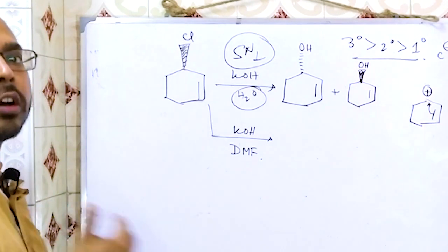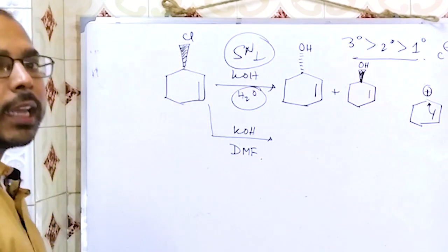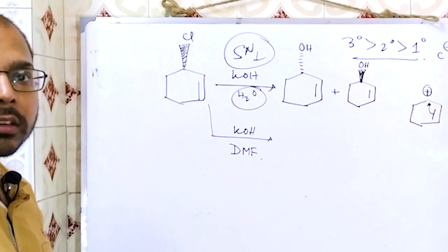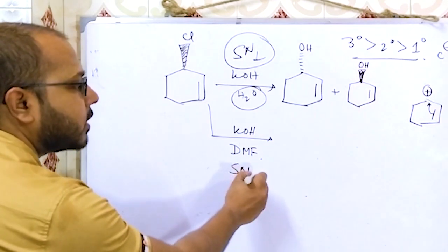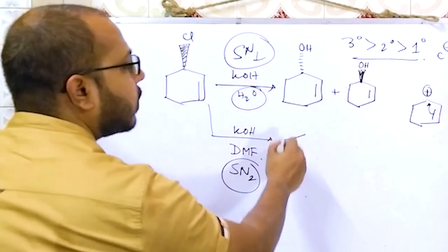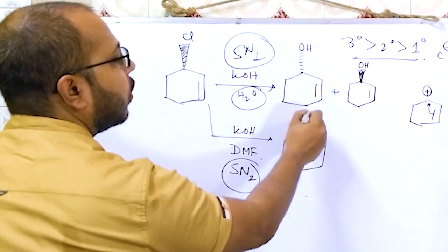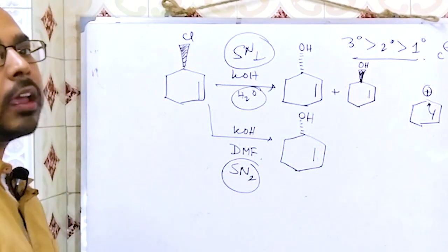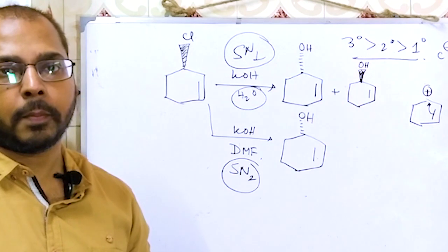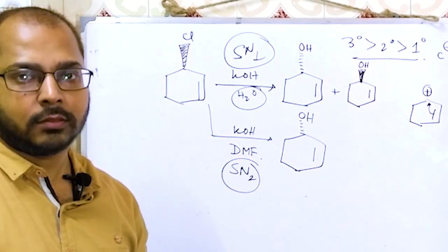In the polar aprotic solvent case, OH⁻ attacks before carbocation formation, giving SN2. The OH will occupy below the plane since the leaving group departs from above the plane, resulting in clean inversion of configuration.